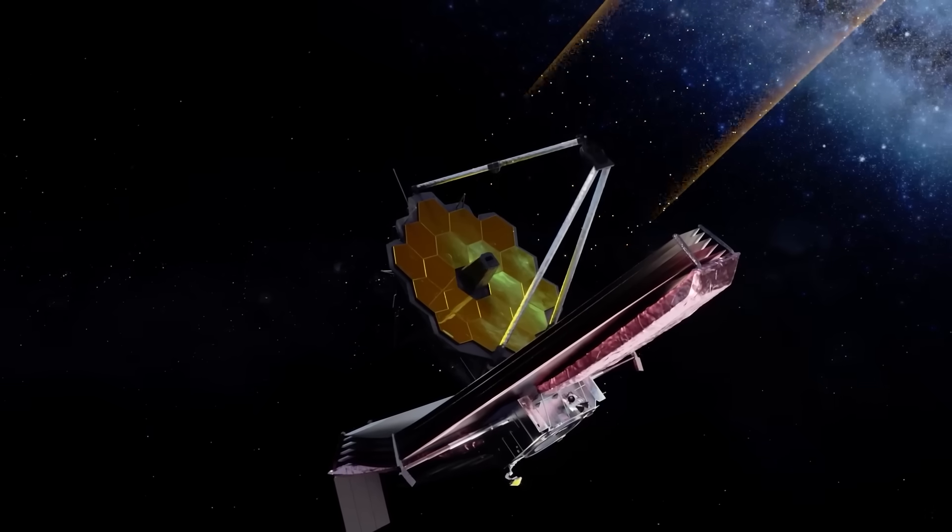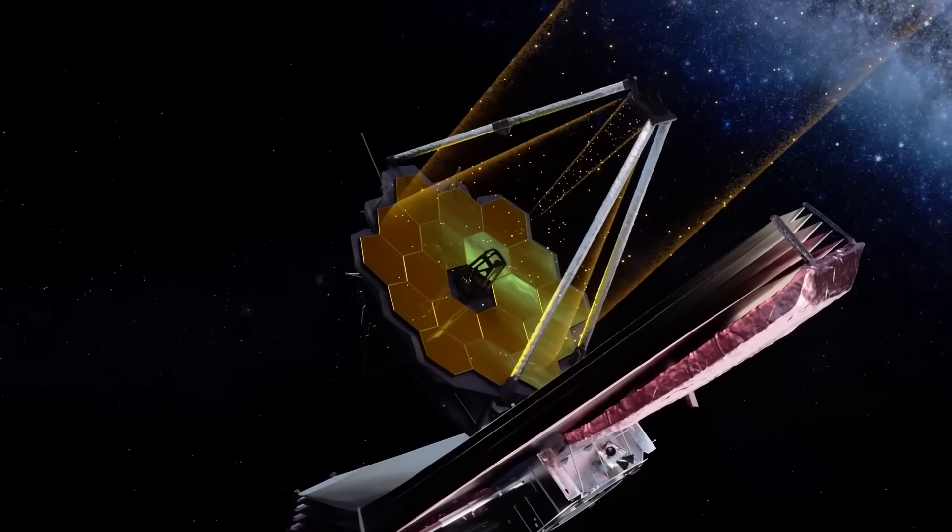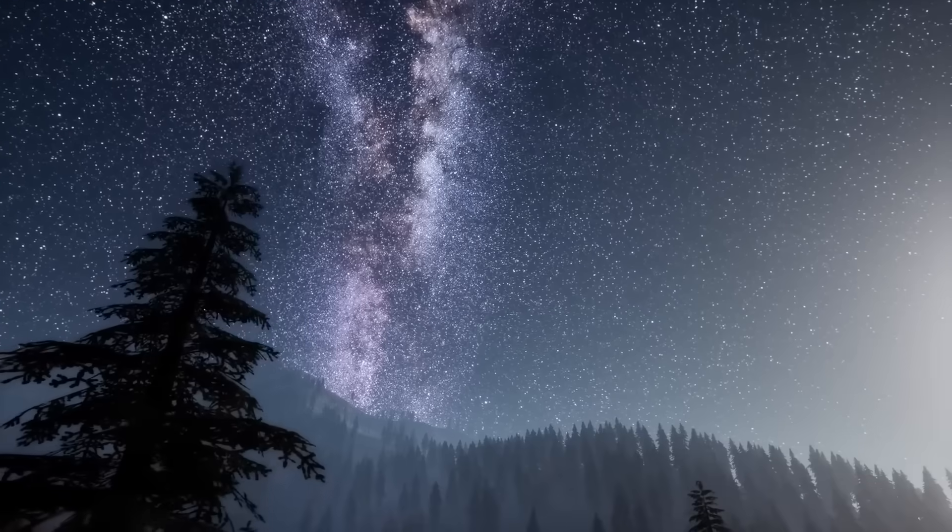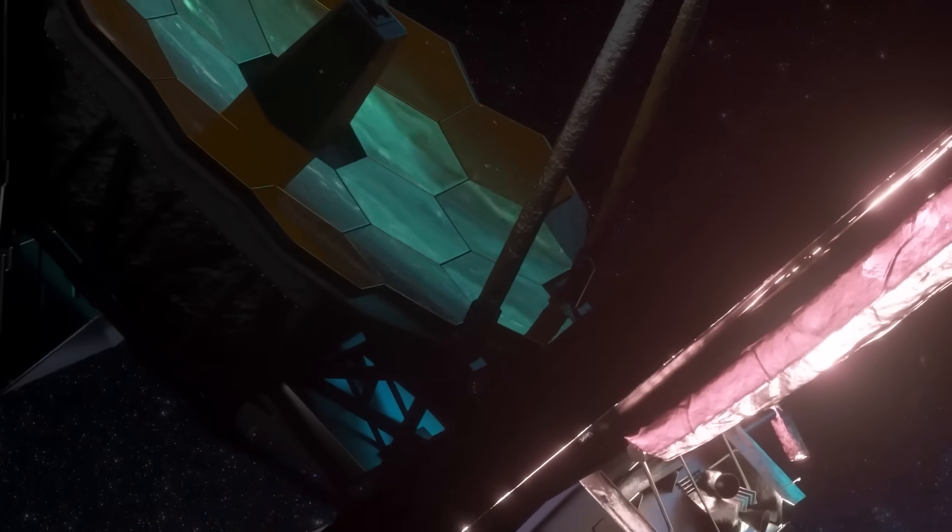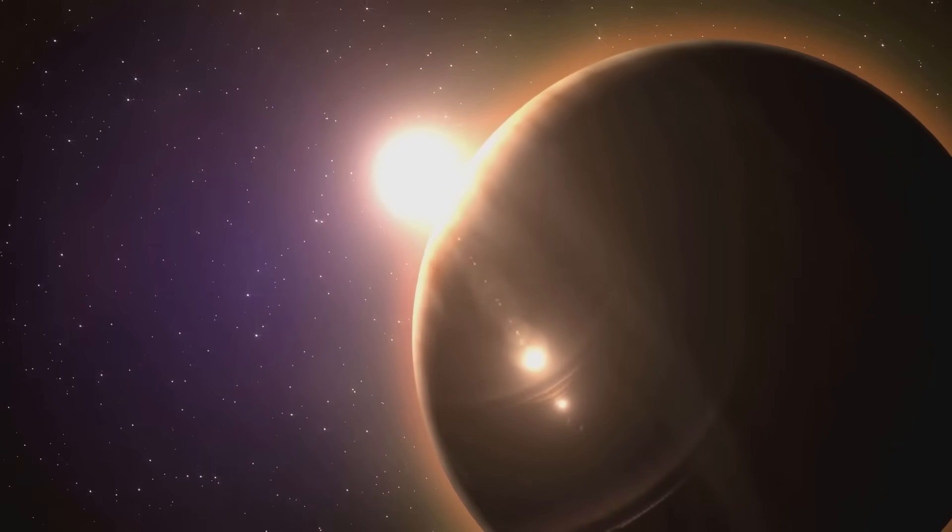What Webb is revealing forces us to confront the possibility that we've been wrong about the universe's timeline, wrong about how stars and planets are born, wrong even about the shape and scale of the cosmos itself. What you're about to hear is not science fiction. It's the reality captured by a 10 billion dollar telescope sitting a million miles from Earth. And if these discoveries are correct, they mean the laws of physics as we know them are not just incomplete. They might need to be rewritten from scratch.